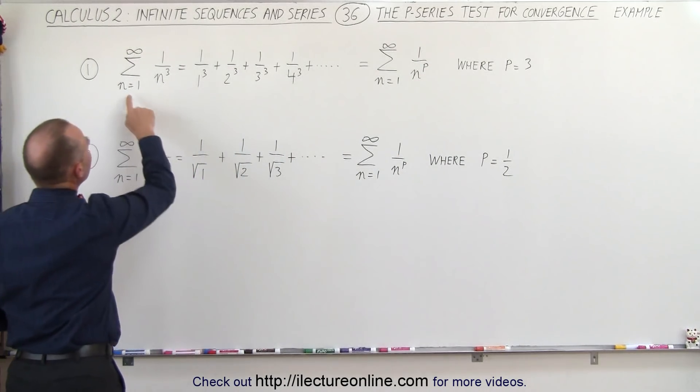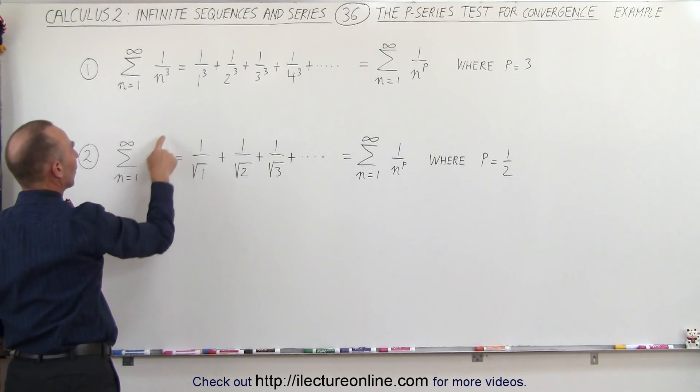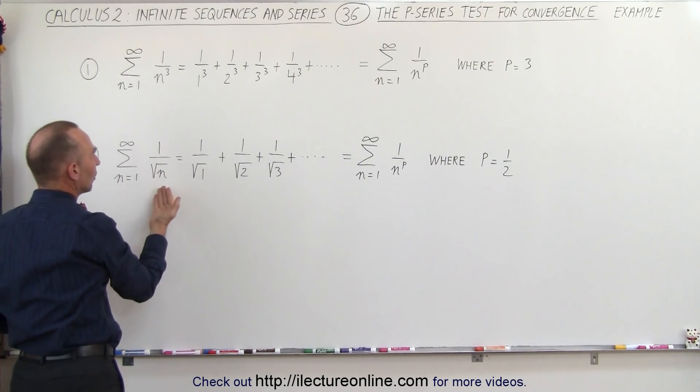Now in this example, p is equal to 3, so we have 1 over n to the third power. In this example, we have 1 over the square root of n, so in this case, p is equal to 1 half.